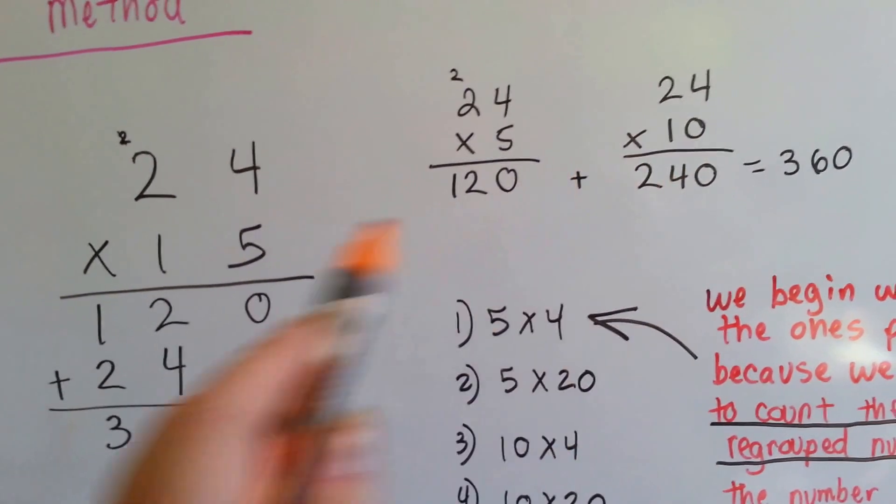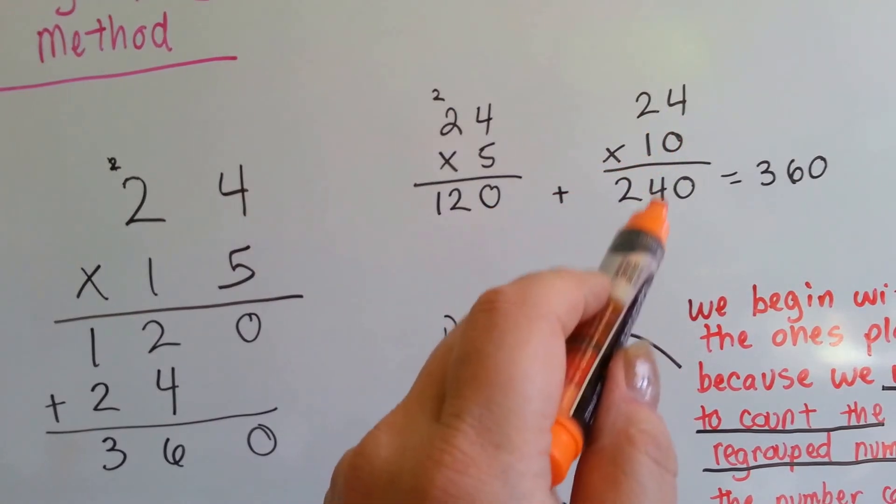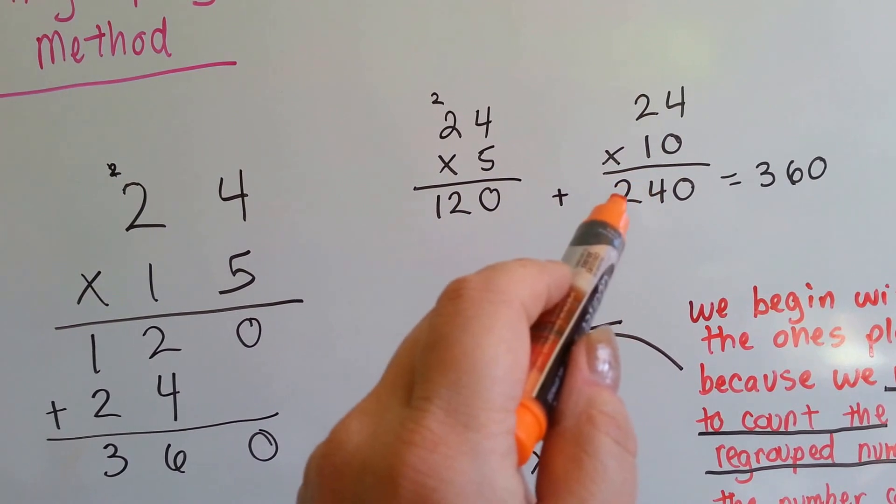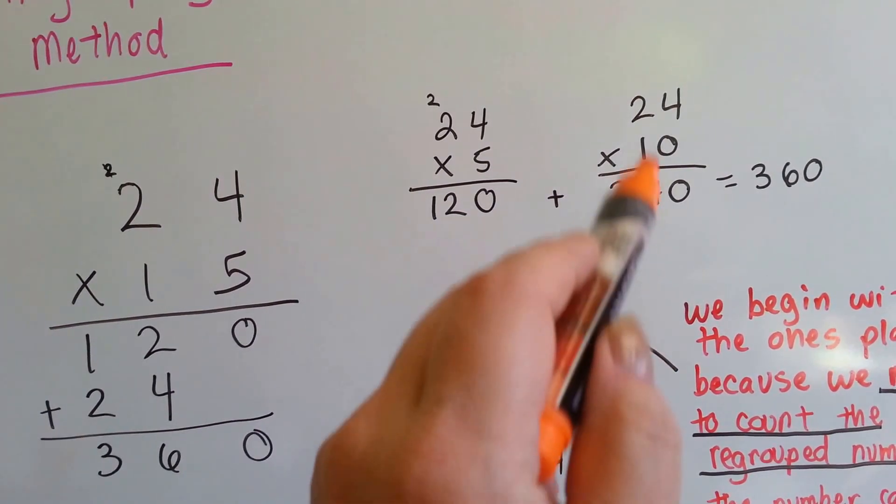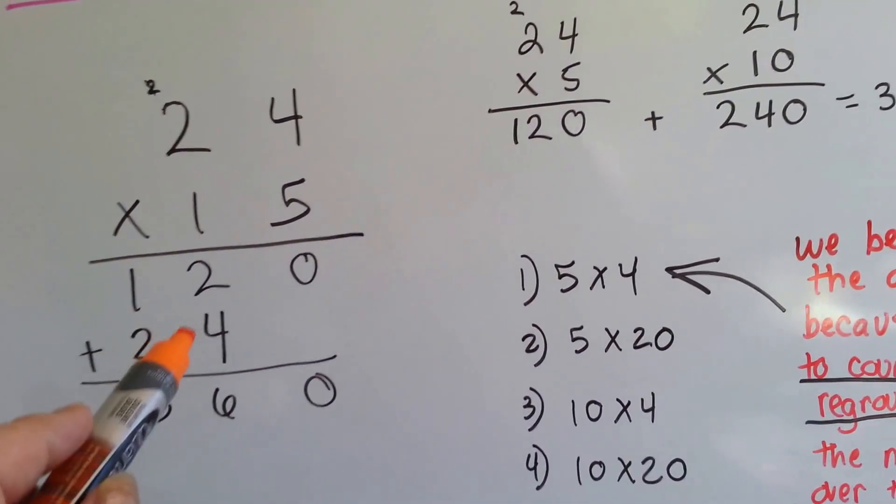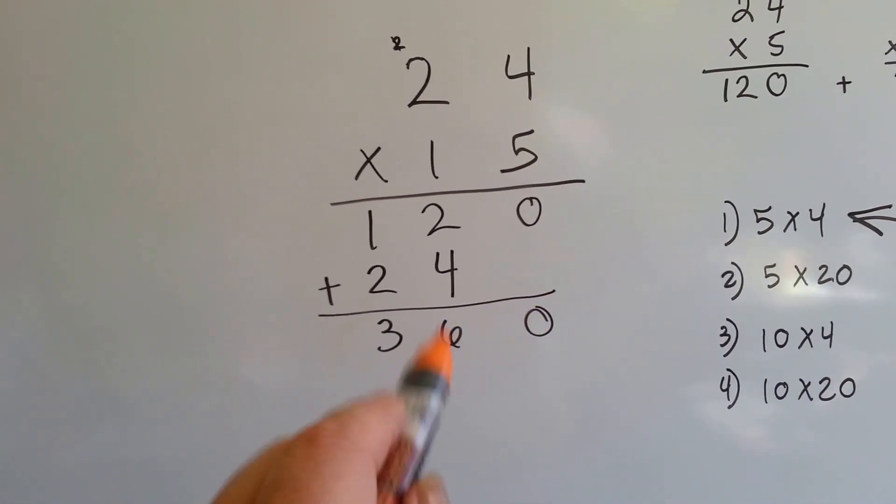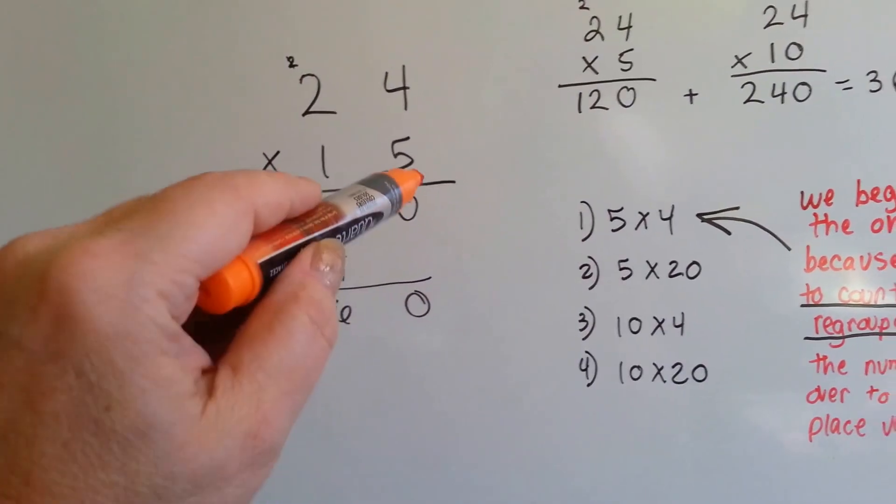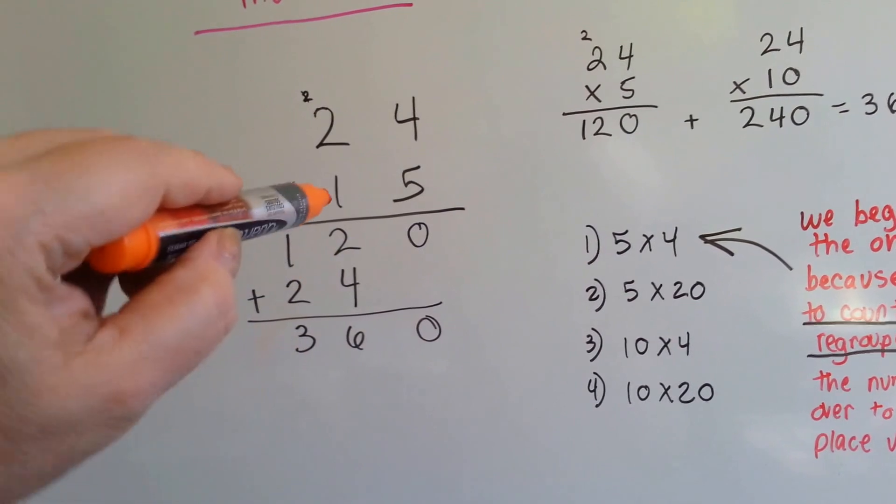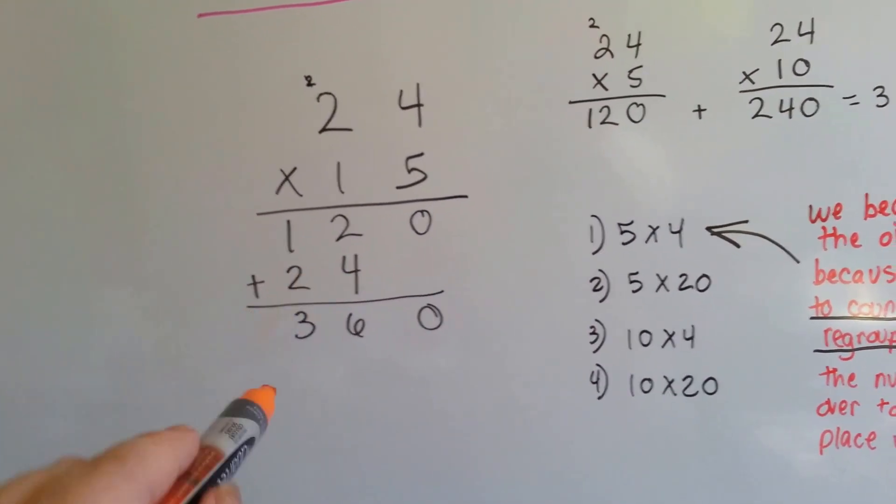So it's really a 10, because it's in the tens place. So 10 times 4 is 40, and then times the 2 is 2. 10 times 24 is 240. We stack them on top of each other, and then we add. 0, 6, 3. So the first thing we did was we distributed the 5 to the 4 and the 2, put it down here, and then we added.